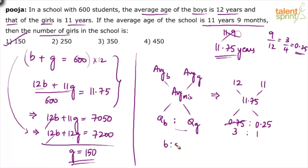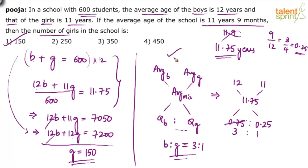Number of boys to number of girls is 3 : 1. The total number of boys and girls is 600, so divide 600 in the ratio 3 : 1. That gives 4 parts total, so one part equals 150. Number of girls is 1 part, so 150 is the answer. Number of boys is 3 parts, so 3 × 150 = 450. You can use allegations as well, which appears to be a smarter method compared to the original one.